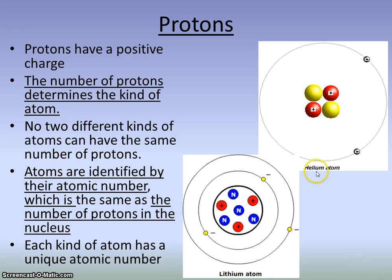Here we have a helium atom — it has two protons, which means its atomic number is two. Here's a lithium atom having three protons — I can tell because they have plus signs showing they are positively charged protons — so that is atomic number three.